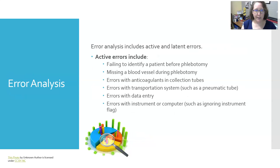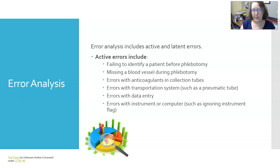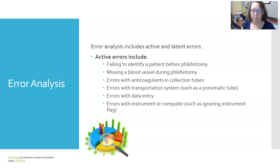Error analysis can include active and latent errors. Active errors include failing to identify a patient before phlebotomy, missing the blood vessel during phlebotomy, errors with anticoagulants in collection tubes — such as collecting the wrong tube — errors with transportation systems such as the pneumatic tube system, errors with data entry, and errors with instruments or computers such as ignoring an instrument flag.